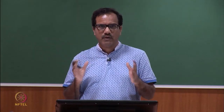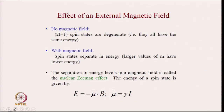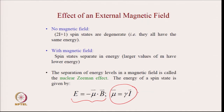In a nutshell, if there is no magnetic field, the 2I+1 spin states are degenerate — they have the same energy. When you apply a magnetic field, the degeneracy of spin states is removed and they now differ in energy. Separation of energy levels in a magnetic field is called the nuclear Zeeman effect. The energy of a spin state is given by E = −μ·B, and we have already discussed that μ = γI (or J, as some books refer to angular momentum).